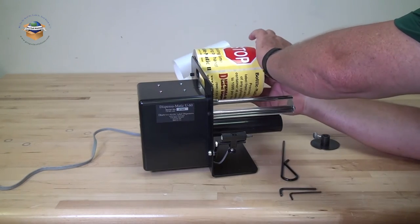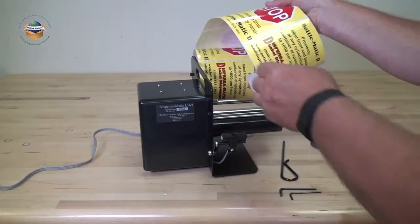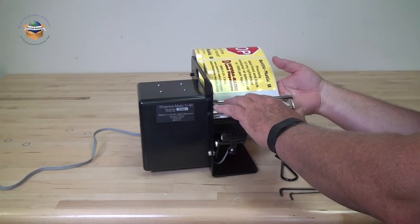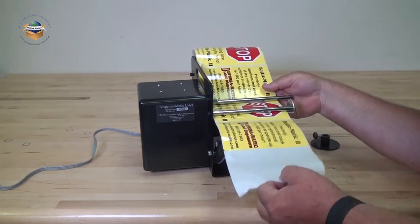Take your locking collar, put it on, lock it down. You're going to feed your label liner underneath both rods and around the dispensing plate.